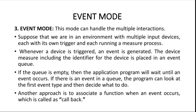Whenever a device is triggered — whenever you press a key or press the mouse button — an event is generated. The device measure, including the identifier for the device, is placed in an event queue. Each device has an identifier, which is like an address: keyboard one is the address for the first keyboard, keyboard two for the second, and so on. All inputs from different keyboards or mice are stored in the event queue.